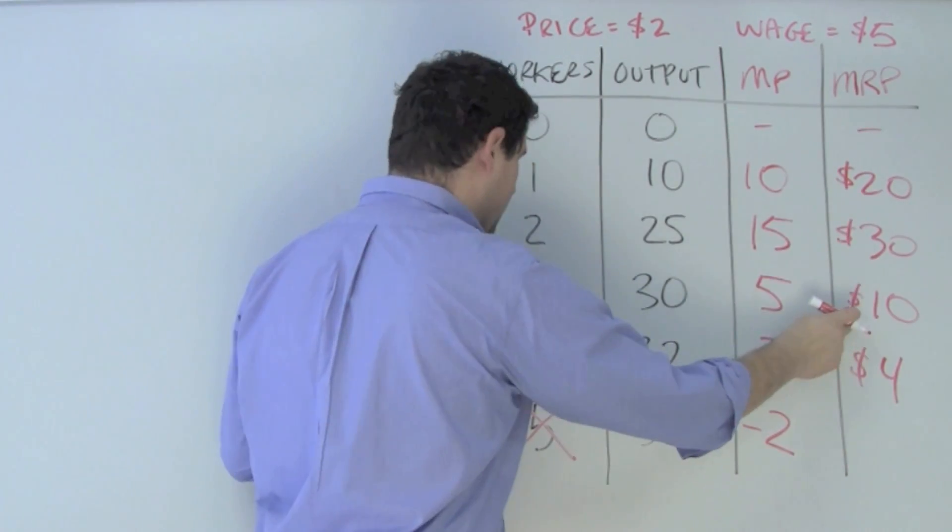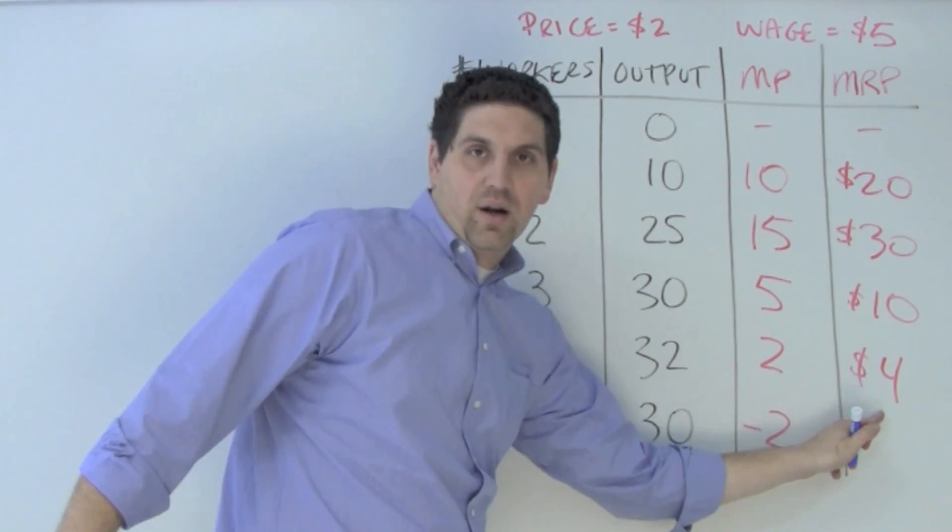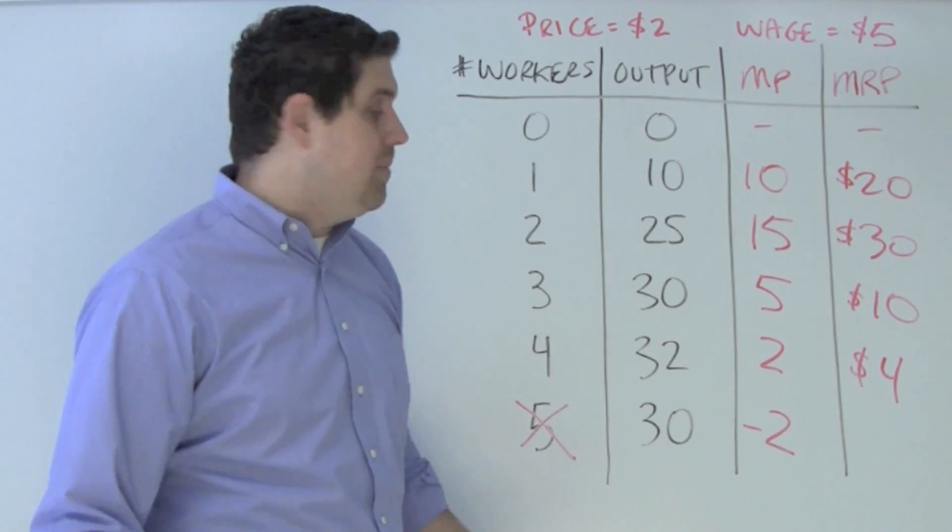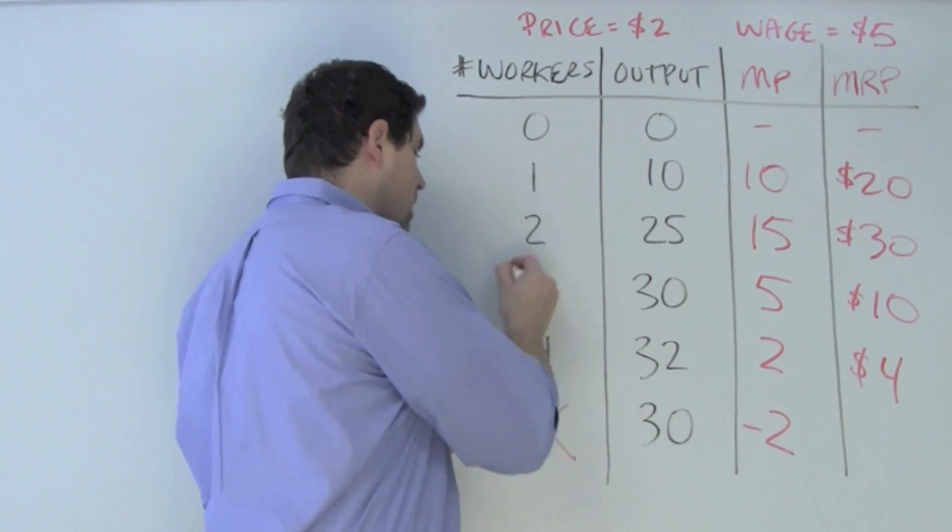You'd hire the second worker and the third worker, but you wouldn't hire the fourth worker. The fourth worker adds an additional $4 of revenue, but it costs you another $5 to hire him. So you will not hire the fourth. You will hire three.